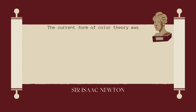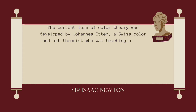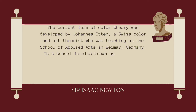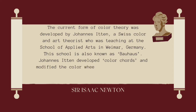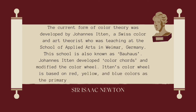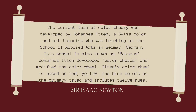The current form of color theory was developed by Johannes Itten, a Swiss color and art theorist who was teaching at the School of Applied Arts in Weimar, Germany — also known as the Bauhaus. Itten developed color codes and modified the color wheel. His color wheel is based on red, yellow and blue as the primary triad, and includes 12 hues.